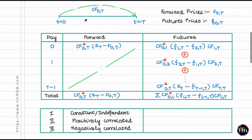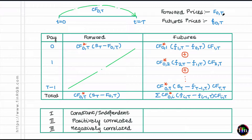This capitalization factor is computed using interest rate information available at time t=0 — that means interest rates as they were prevailing at t=0. Now, in terms of notation, since we are trying to explain the difference between forward price and futures price, let's use different notation for both. Forward prices are denoted by capital F₀,T where zero is the quote time and T is the delivery time. Futures prices use lowercase f₀,T.